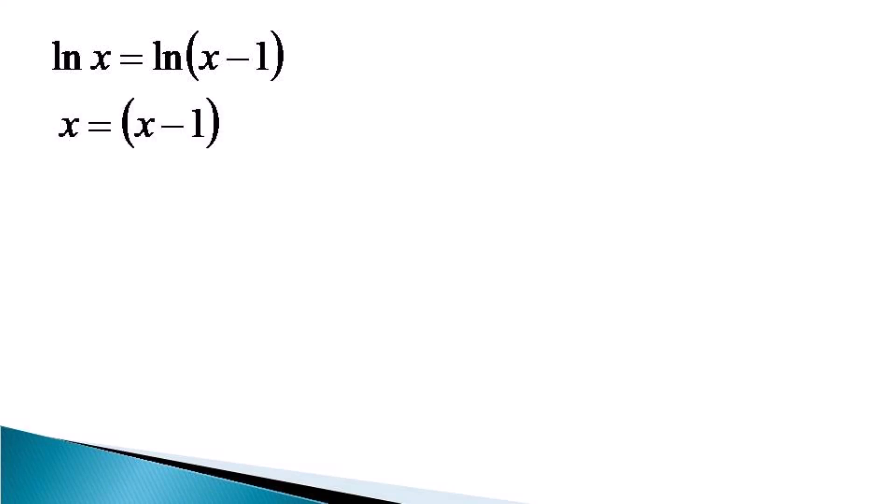Dividing both sides by x, we get 1 equals 1 minus 1/x, which gives us 1/x equals 0. This is possible only when x equals infinity. So x equals infinity is one solution of this equation, which we can see from initial observation as well.